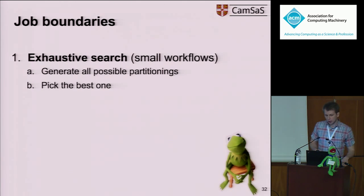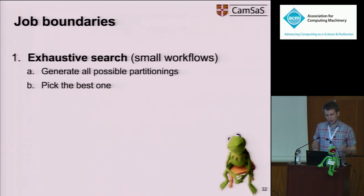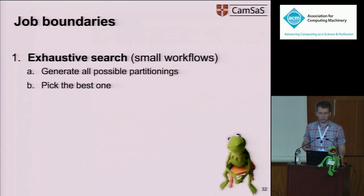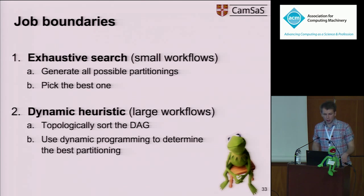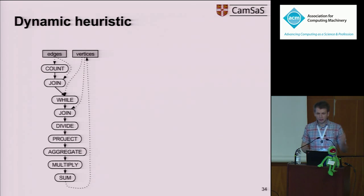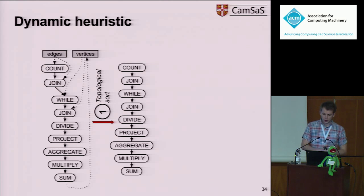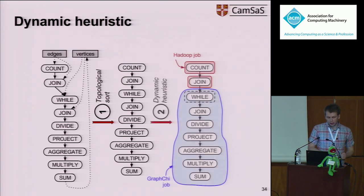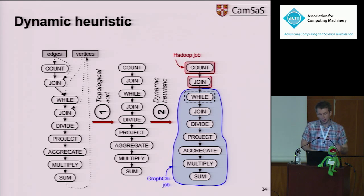To answer the job boundaries question, we use two search strategies. One exhaustively searches all possible job boundaries, but this only works well on workflows of up to around 14 operators due to exponential complexity. For larger workflows, we use a dynamic heuristic: it takes the workflow, topologically sorts it to get a linear ordering, and then applies a dynamic programming algorithm that gives the optimal solution with respect to the linear ordering and the cost model. This turns out to work quite well in practice.